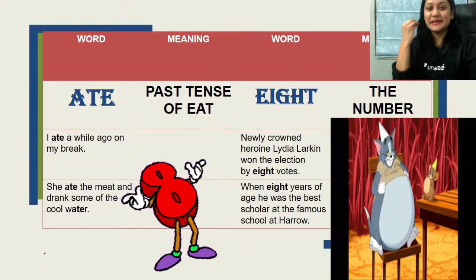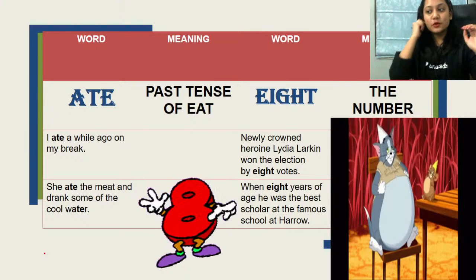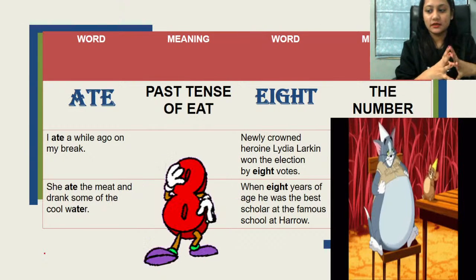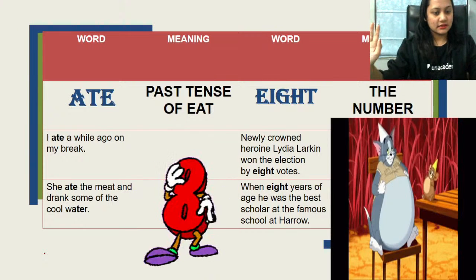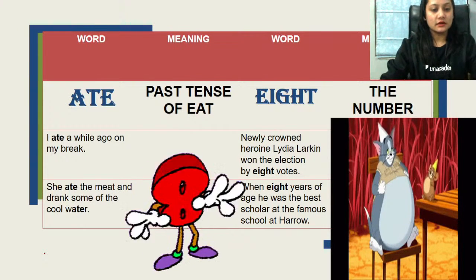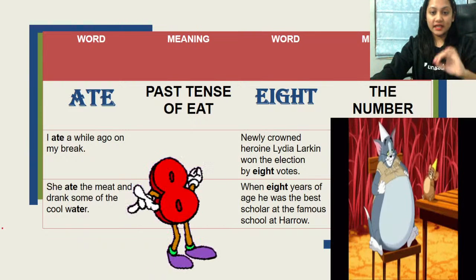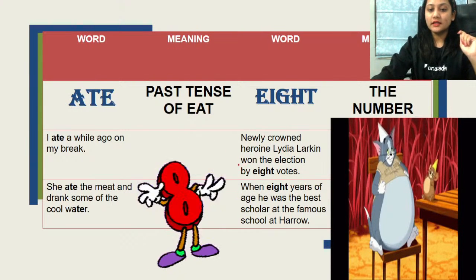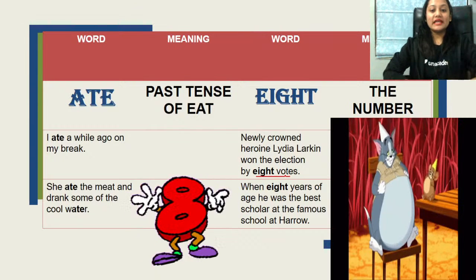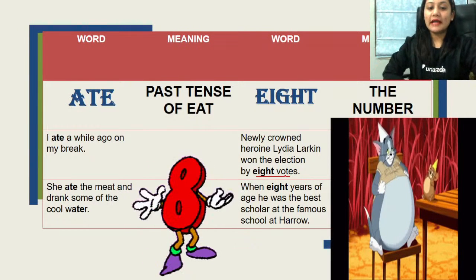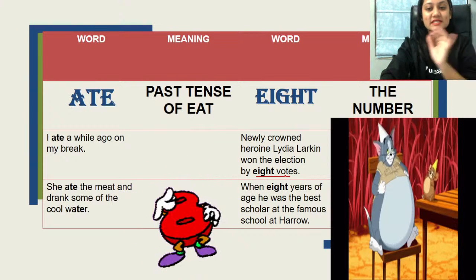Next is 'ate' and 'eight'. ATE is simply the past tense of eat — 'I ate a while ago on my break' and 'she ate the meat and drank some of the cool water.' EIGHT is the digit 8 — 'Lydia Larkin won the election by eight votes' and 'when eight years of age, he was the best scholar at the famous school at Haru.'